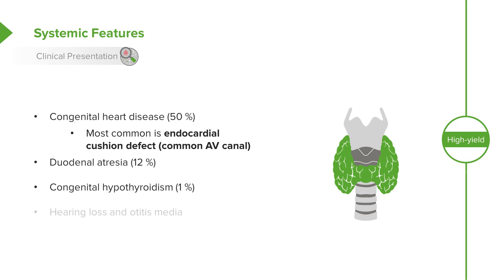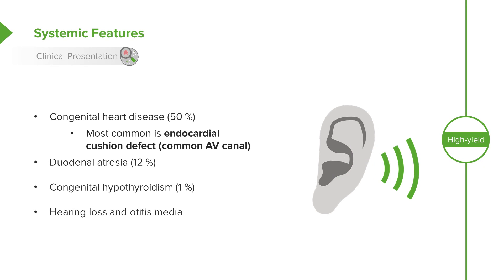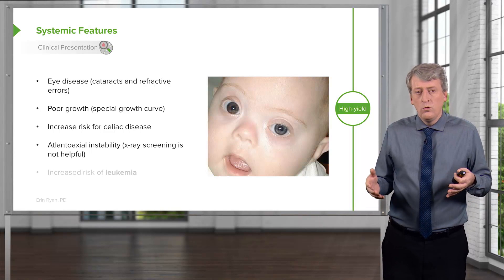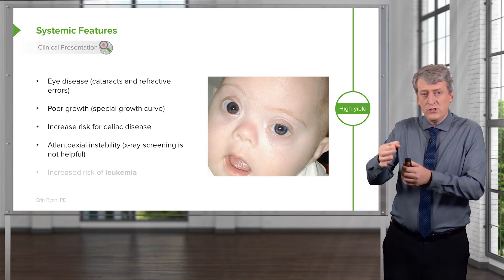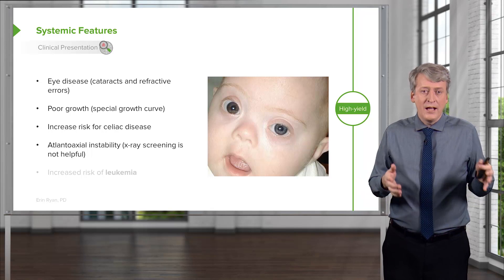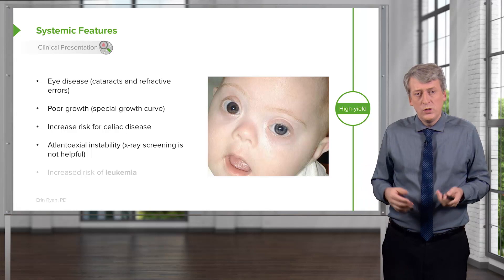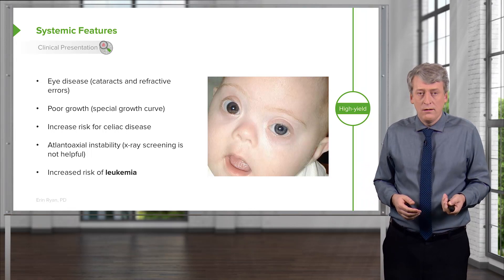Patients may develop congenital hypothyroidism, which should hopefully be picked up on the newborn screen — it occurs in about 1% of patients with Down syndrome. Hearing loss and especially frequent otitis media is also common. They may develop eye disease such as cataracts or refractive errors, and poor growth — in fact, patients with Down syndrome should be plotted on their own special growth curve, available online. Additional concerns include increased risk for celiac disease and atlantoaxial instability, which is instability of C1 on C2. X-ray screening is no longer routinely recommended, though it may be required for participation in the Special Olympics. Additionally, they may have an increased risk of leukemia, which is very important.